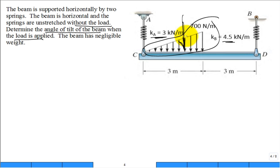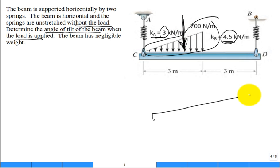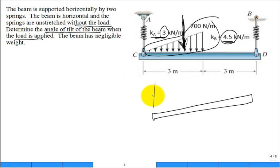Because they stretch a different distance — this is a weaker spring, this is a stiffer spring, and the load is shifted over more toward the left — it's going to tilt that way. It's going to be a longer stretch on one side and a shorter stretch on the other. Now they ask you to calculate that angle of tilt.